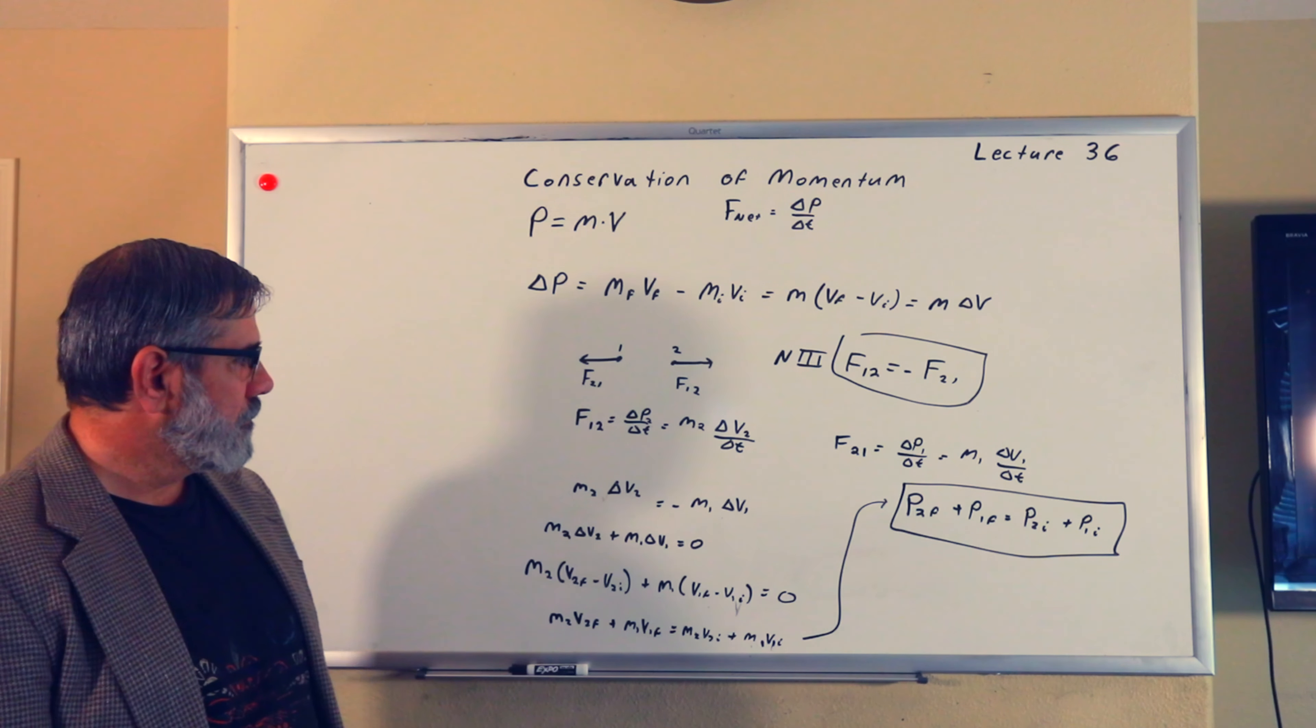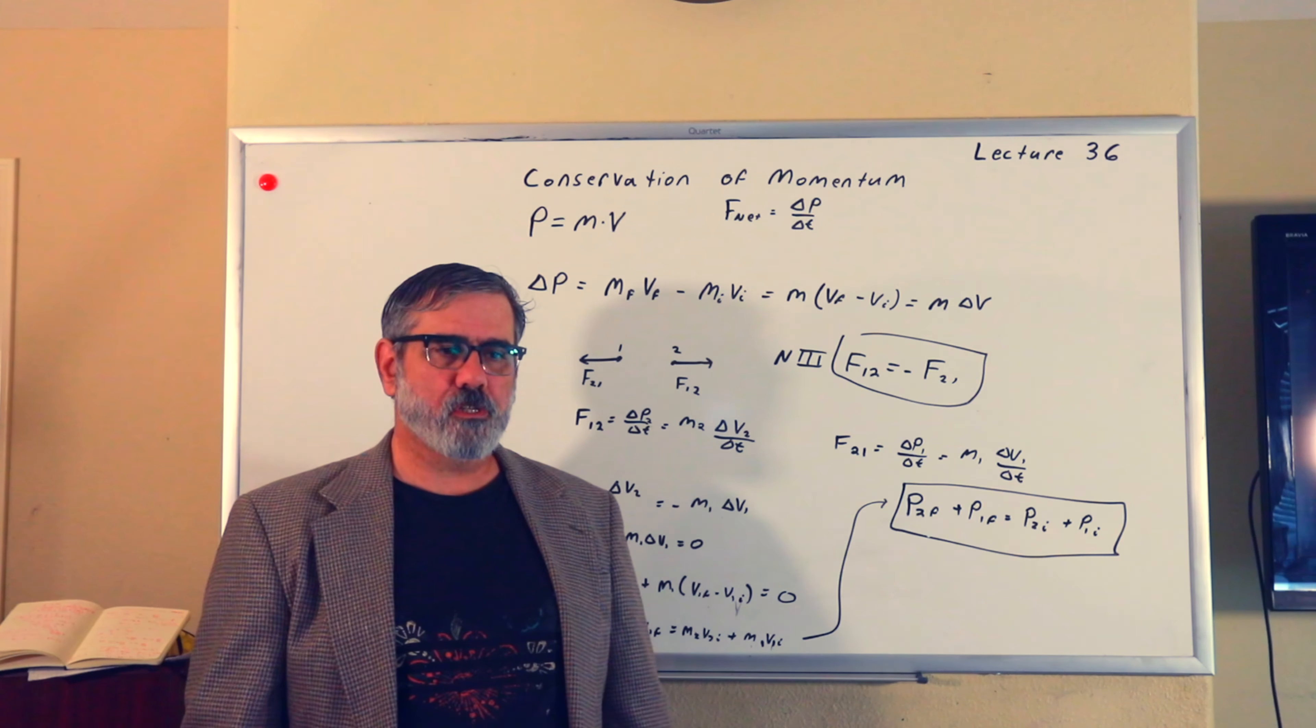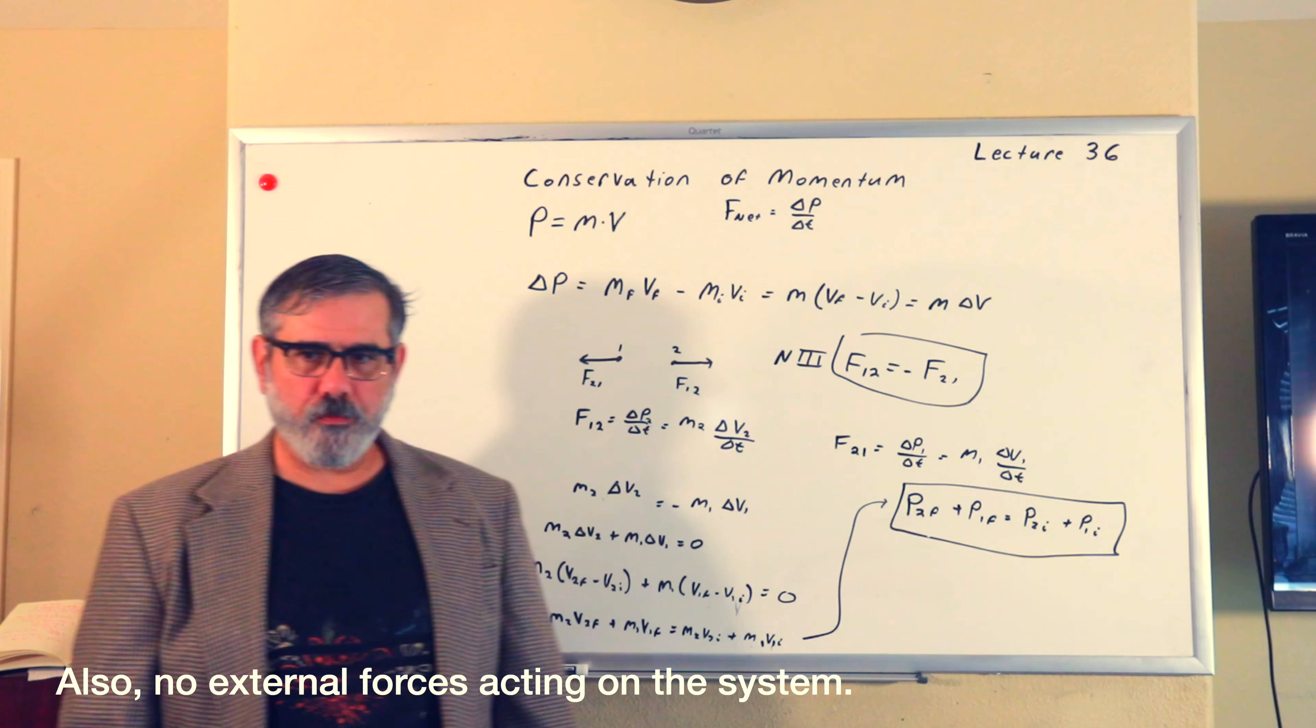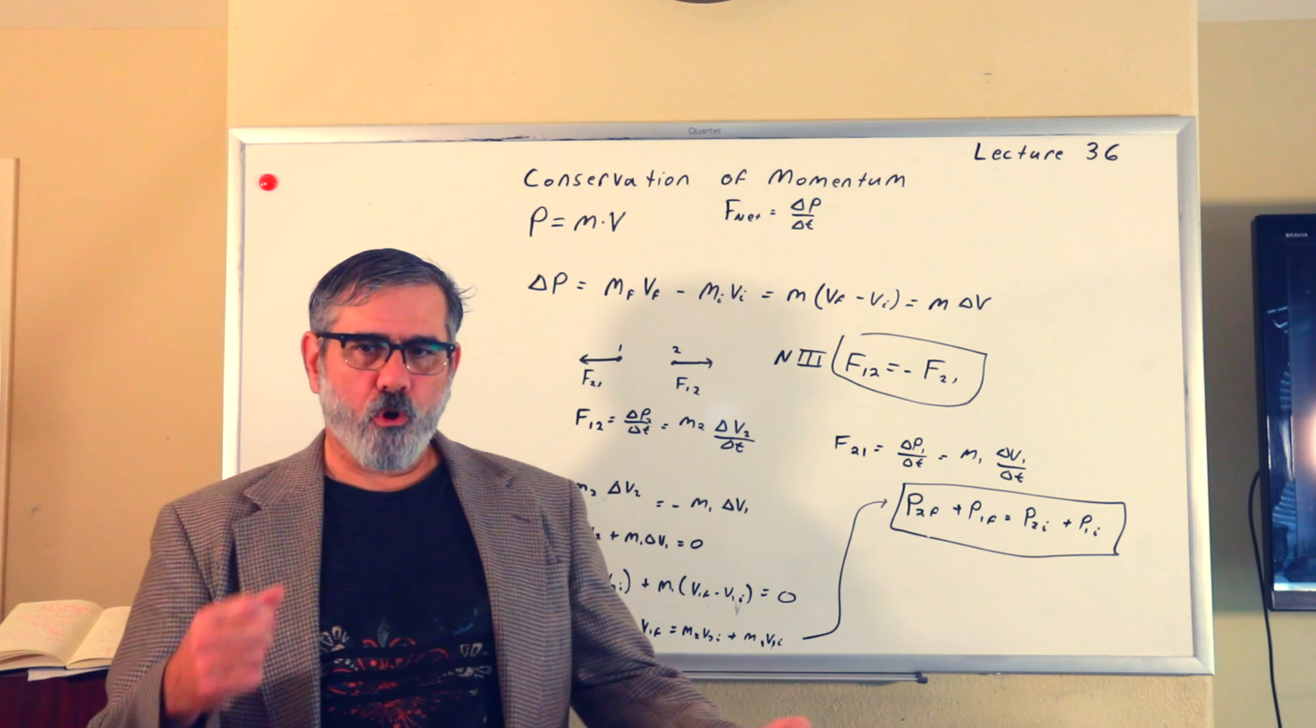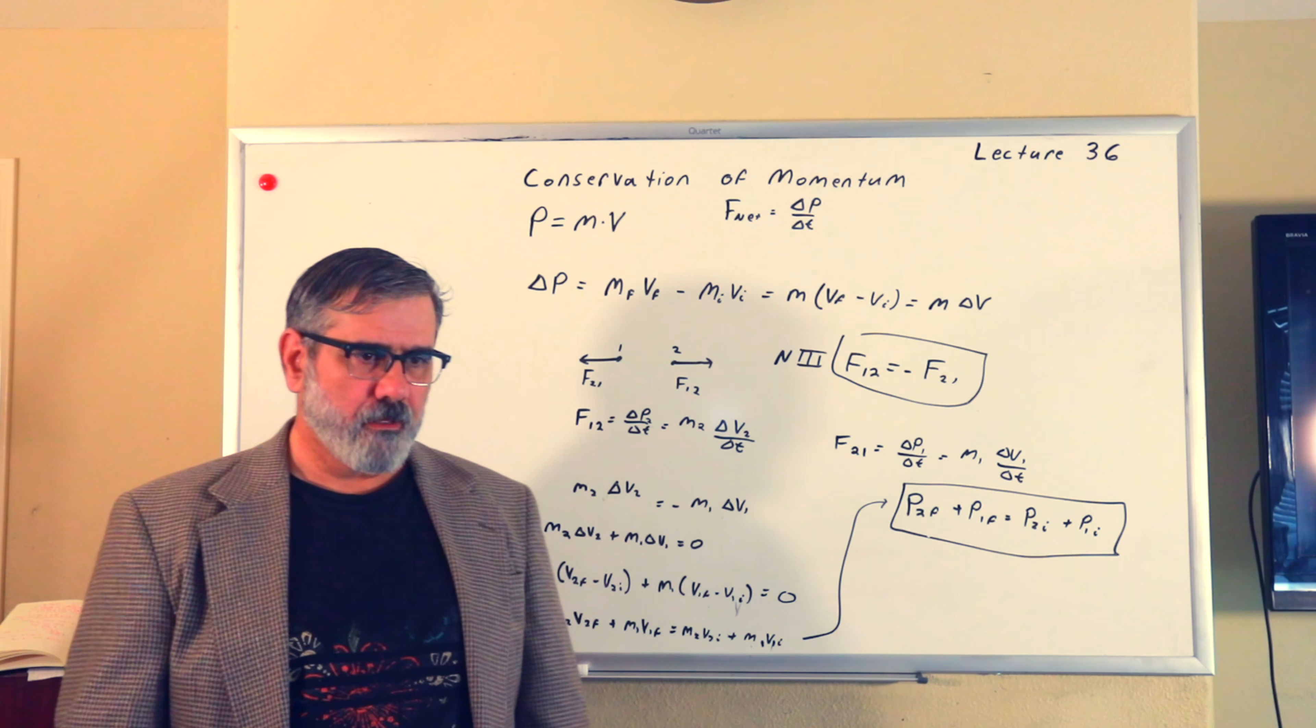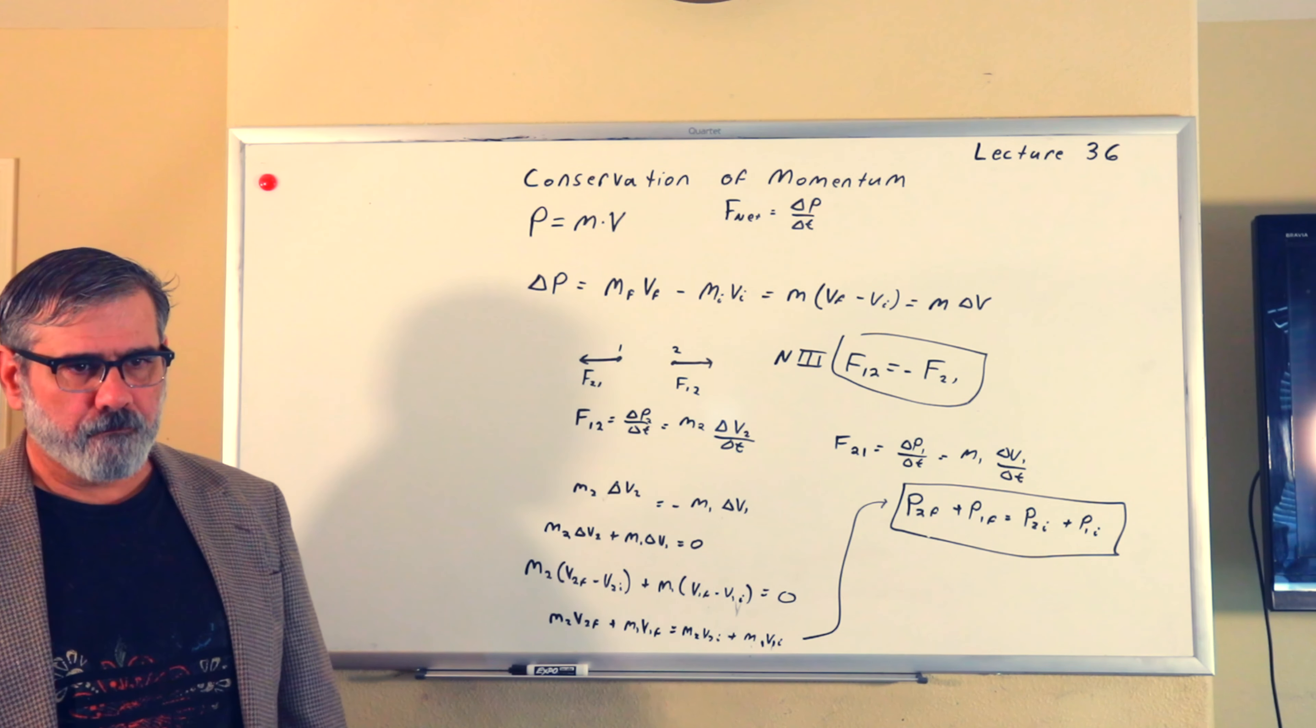This is for what we call a closed system. A closed system would consist of these reaction force pairs. Now it doesn't just apply to two particles interacting with each other. This could be for any number of particles interacting with each other. This could be an earth-moon system, which obviously has lots of particles in it. It's not just two particles interacting with each other, it can be any number of particles interacting with each other.